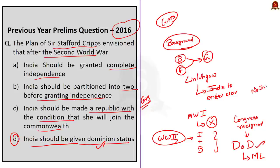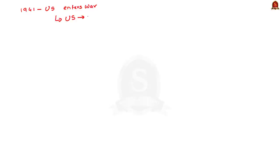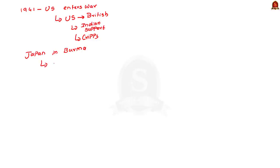In 1941, Japan carried out an airstrike on Pearl Harbor, making the United States enter the war in support of the Allies. The US was creating pressure on the British government against its imperial policies in India, and was keen on getting Indian support for the war. Also, Japan was rapidly advancing — the fall of Burma to Japanese forces worried the British, and the threat of Japanese invasion of India was very evident. This pressure on the British to get Indian cooperation motivated them to send the Cripps Mission.